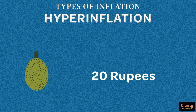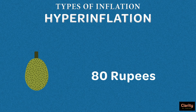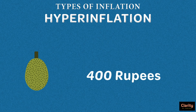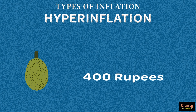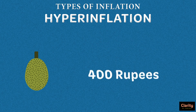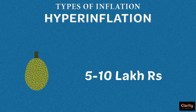The next day, you go and see the same jackfruit costs 80 rupees. Within another two days, it becomes 400 rupees per fruit. By the end of that month, it's 50,000 rupees for one jackfruit. In a few months, a single jackfruit may cost as much as 5 or 10 lakh rupees.